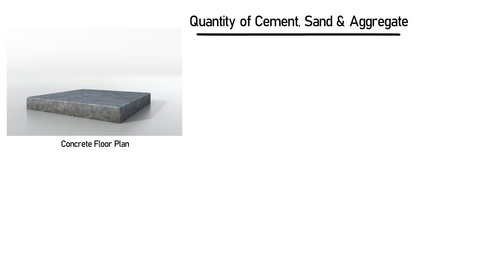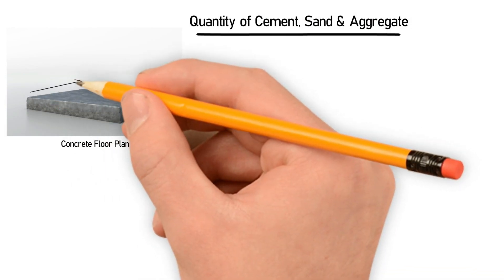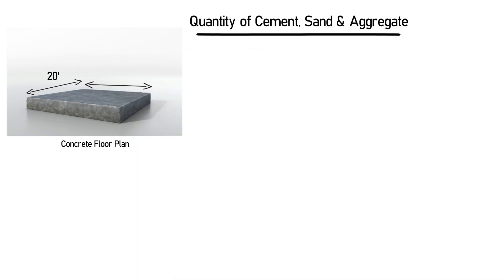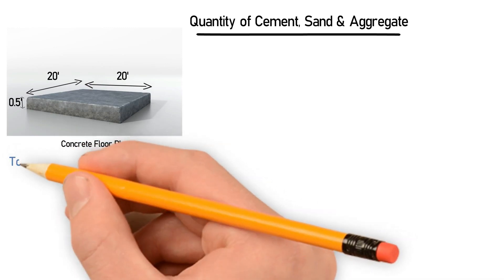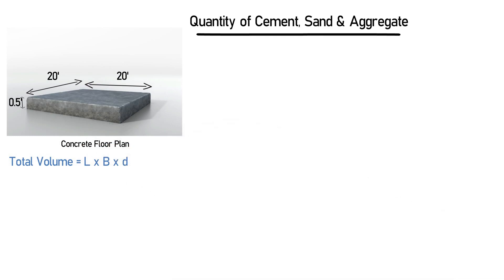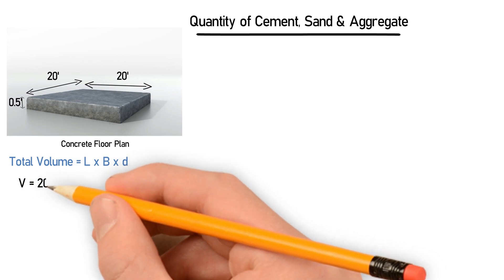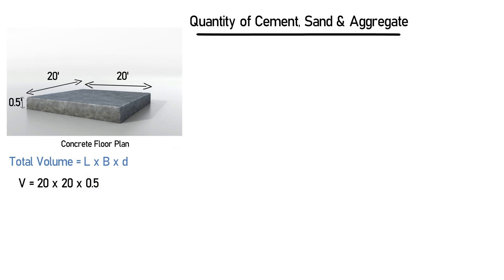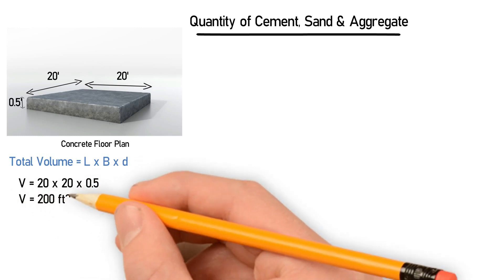Let's take an example of a concrete floor plan. The length is 20 feet, the breadth is also 20 feet, and the depth is 0.5 feet. The total volume of the floor will be length multiplied by breadth multiplied by depth: 20 × 20 × 0.5 = 200 cubic feet. This is the wet volume.